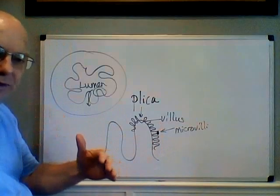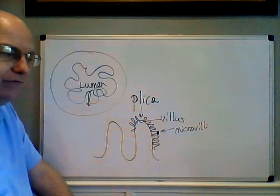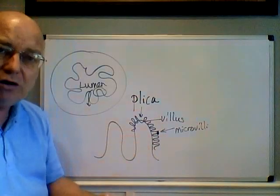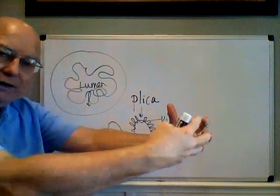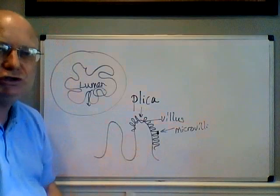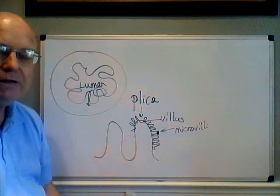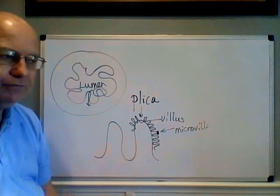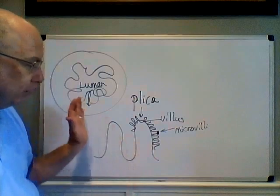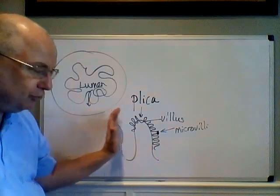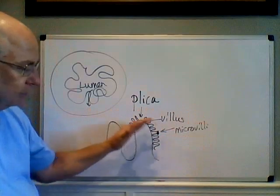Our digestive tract is incredibly long — even longer if we include all the folds on top of folds — so that before whatever I eat comes out the other end, I need to absorb as much nutrition as possible. Most people don't know when their next dose of nutrition is going to come, so if you're lucky enough to eat, you want to absorb as many nutrients as possible. So we have folds on top of folds.